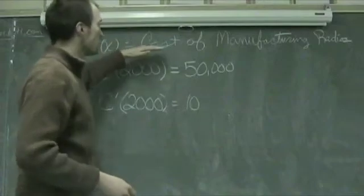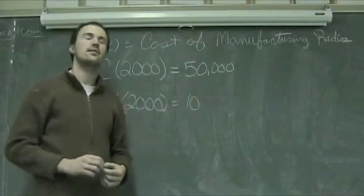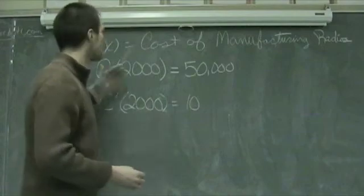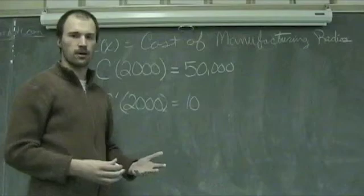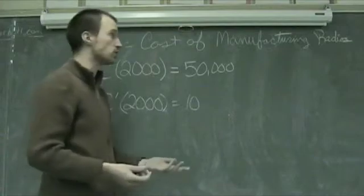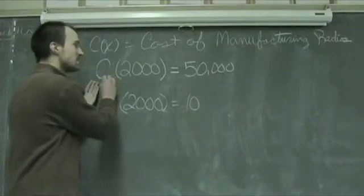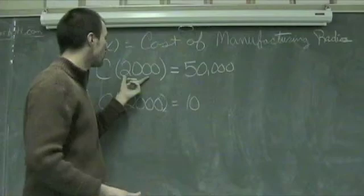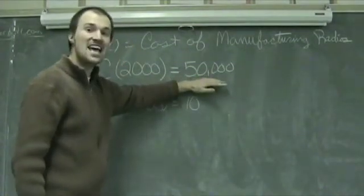Now, C of X equals the cost of manufacturing radios. This is problem number 26. If you haven't done it yet, well, come on, guys. But if you have, maybe you want to follow along with this. Again, we're explaining the marginal cost in economics. So if C of X, they say let C of X be the cost of manufacturing in dollars a set number X of radios. They also tell us that C of 2,000 equals 50,000, meaning that the cost to produce 2,000 radios is $50,000.